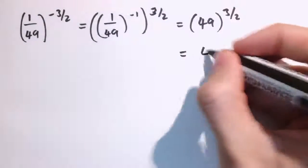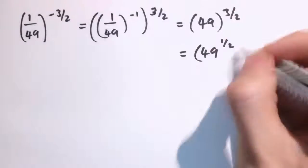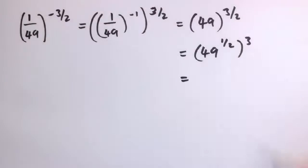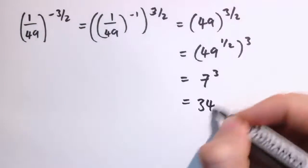And that's 49 to the 1 half cubed. 49 to the 1 half is the square root of 49, which is 7, and 7 cubed is 343.